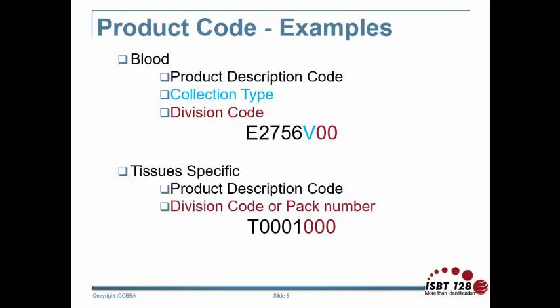For tissues, the first five characters identify the product, and the last three indicate the division code or the number of product packs.